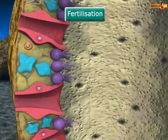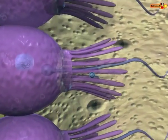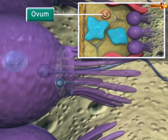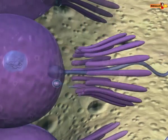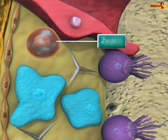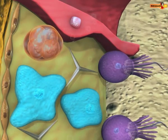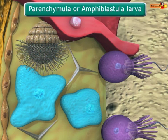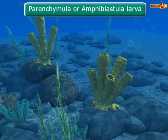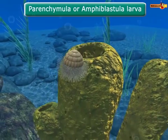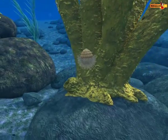Fertilization in sponge is internal. The sperm enters a choanocyte cell which lies adjacent to the mature ovum. The sperm loses its tail and becomes round, then fuses with the mature ovum to form a zygote. The zygote undergoes various divisions and forms a parenchymula or amphiblastula larva, which leaves the sponge, settles on the substratum, and grows into a mature sponge.